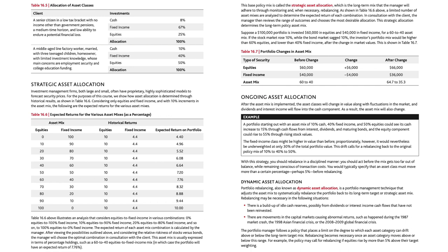The expected return of each asset mix combination is calculated by the manager. After viewing the possibilities and considering the relative riskiness of stocks versus bonds, the manager will choose the optimal combination in consultation with the client. The asset mix is usually expressed in terms of percentage holdings, such as a 60 to 40 equities to fixed income mix, in which case the portfolio will have an expected return of 7.76%. This base policy mix is called the strategic asset allocation — the long-term mix that the manager will adhere to through monitoring and, when necessary, rebalancing.